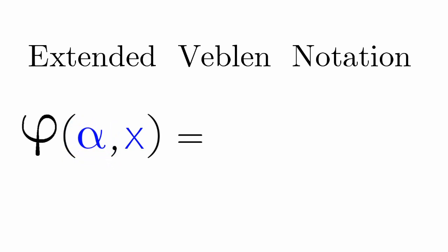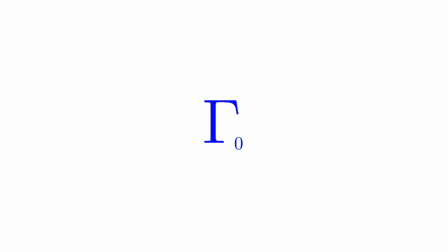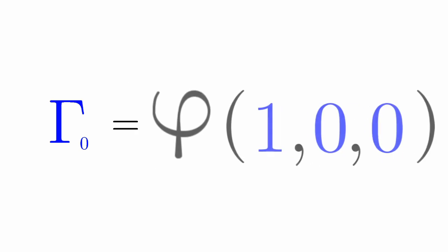But no matter how big our alpha is, it will always be less than Gamma-naught. So we add another variable. Gamma-naught can also be written as Phi 1 0 0.